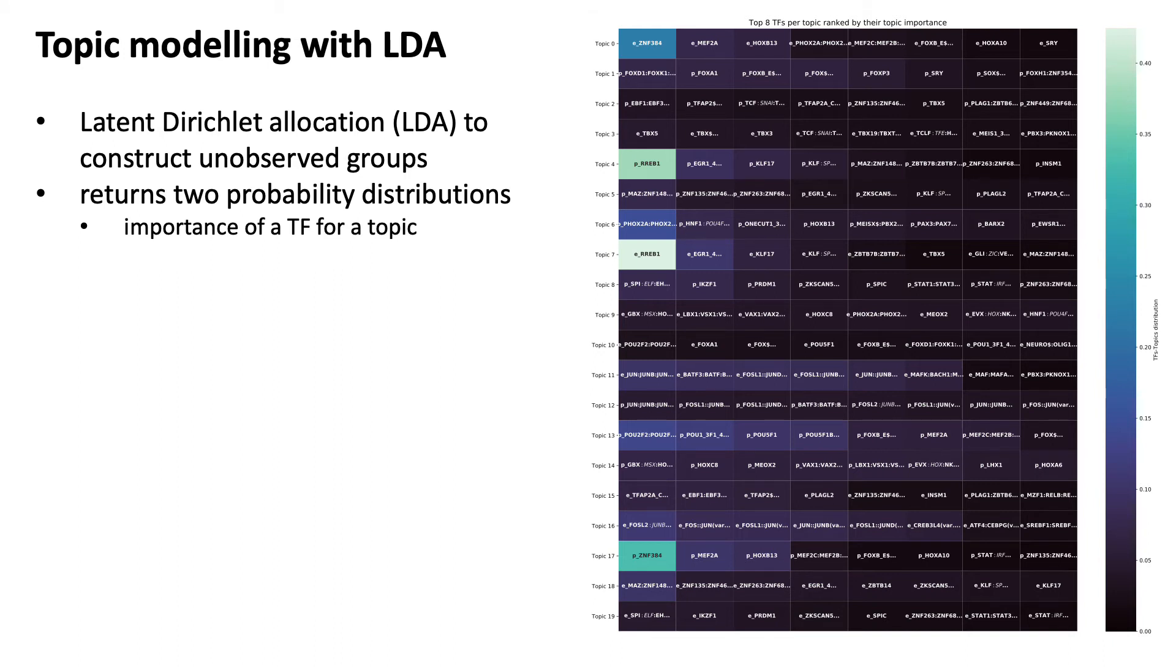First of all, the importance of TF for a topic. So on the right you can see that for each of the 20 topics we used in this approach, you see which of the transcription factors are the most important ones, and you see that some seem to be pretty relevant for defining a topic.